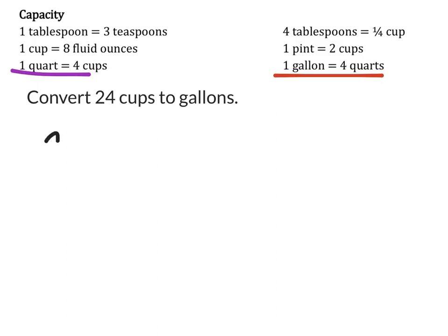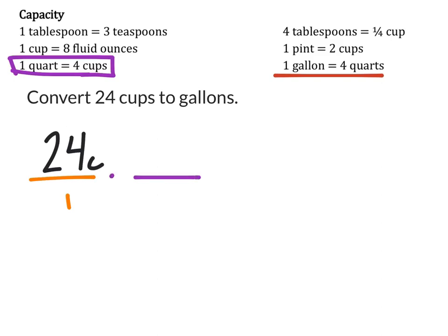So when I take my 24 cups right here, and we could make that over 1 if we wanted to, the first thing I need to do is to convert it into quarts. And then from there, we'll convert it into gallons. So I would multiply this by the conversion factor, where the cups is in the denominator. Again, that cancels out the cups, and we are converting this into quarts. So it's 4 cups is 1 quart.